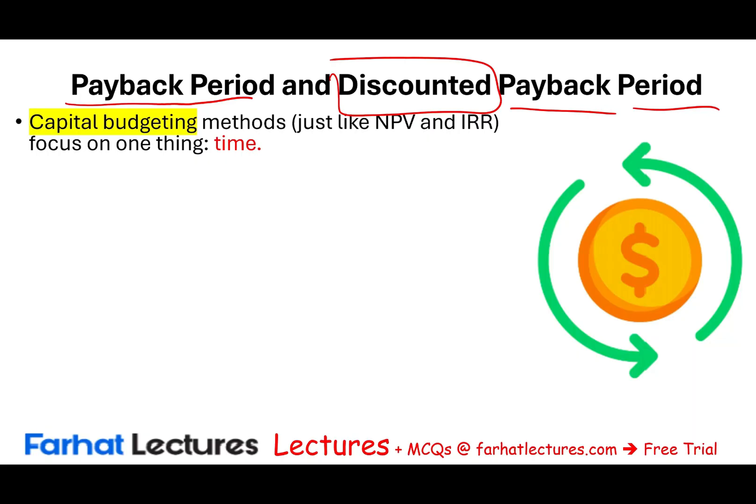What is a capital budgeting project? A big-ticket item purchase — buying a new warehouse, expanding internationally, undertaking a major factory renovation. Rather than using NPV or IRR, some companies use the payback period or the discounted payback period.